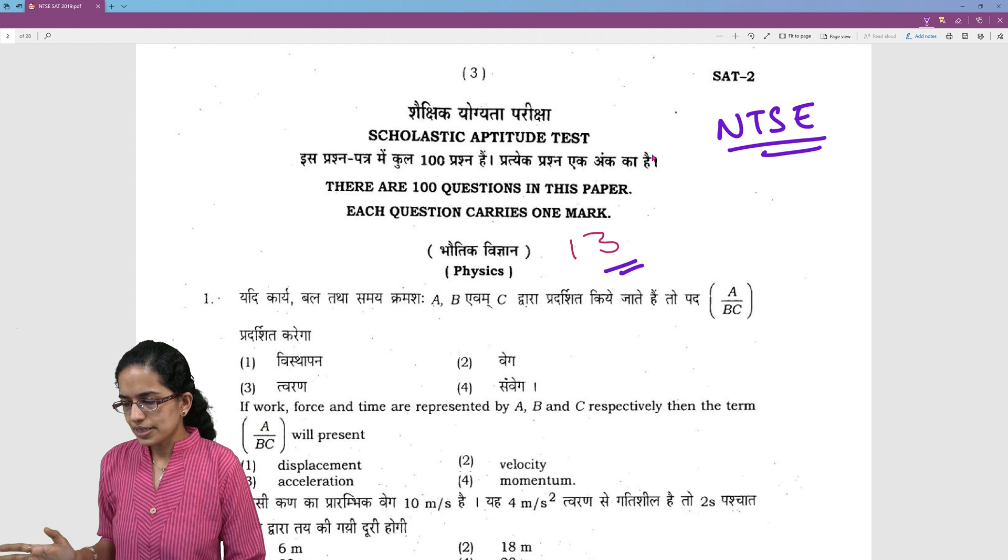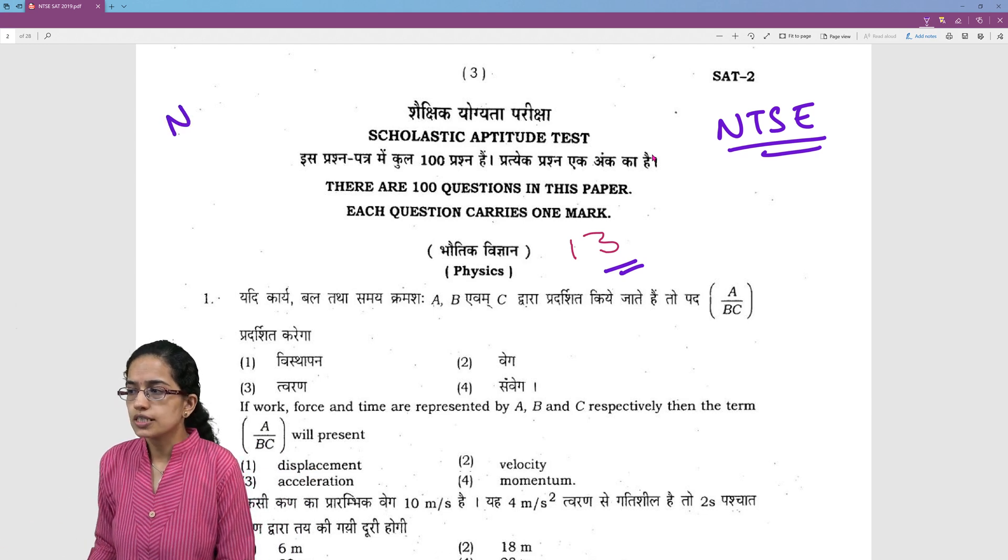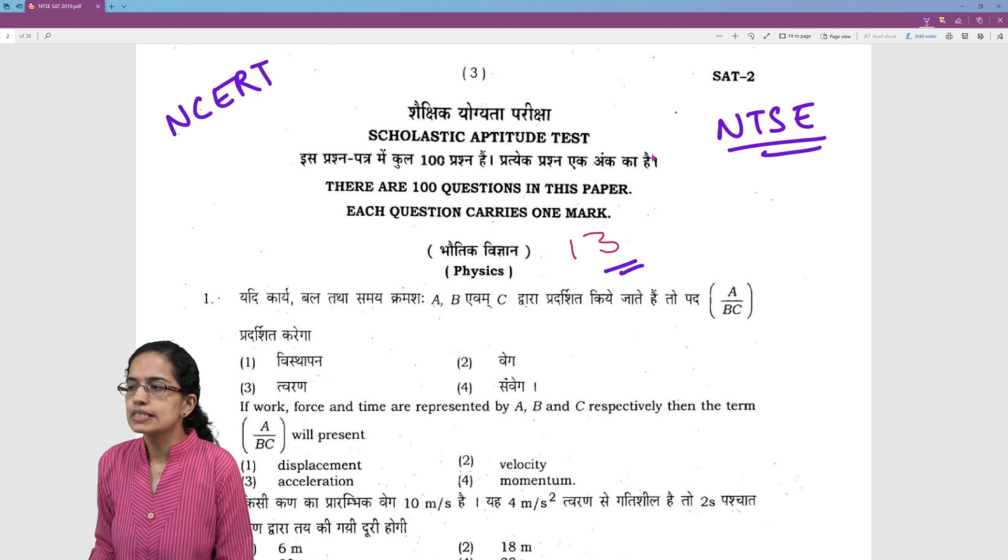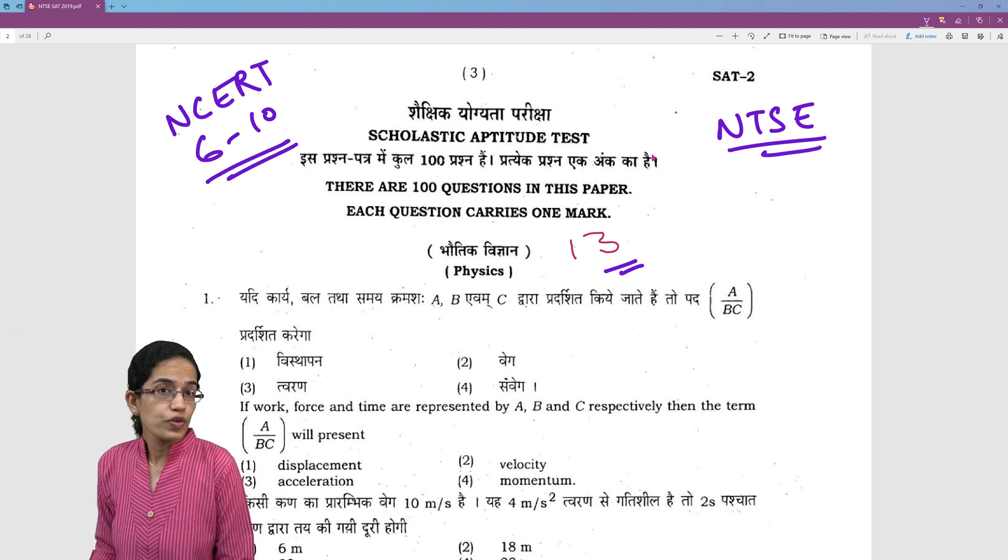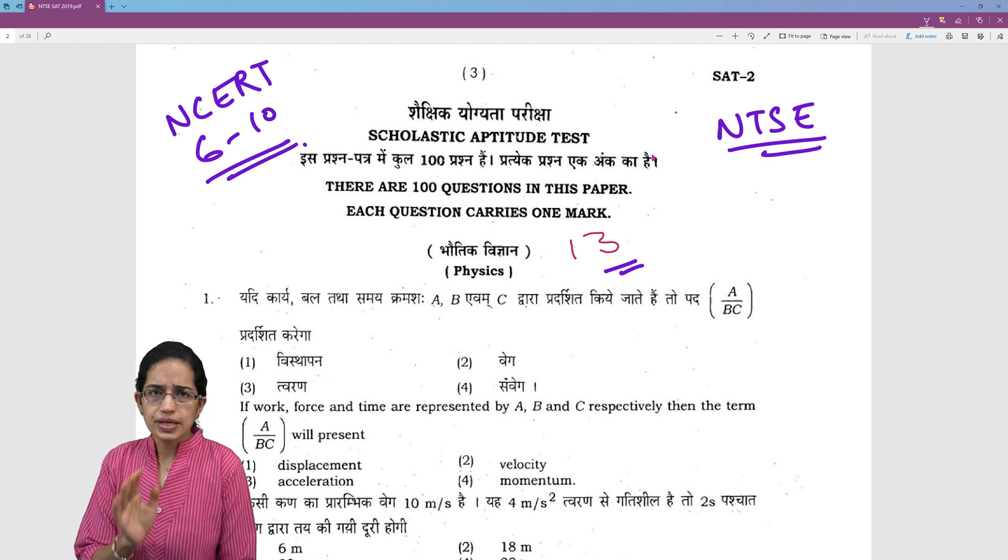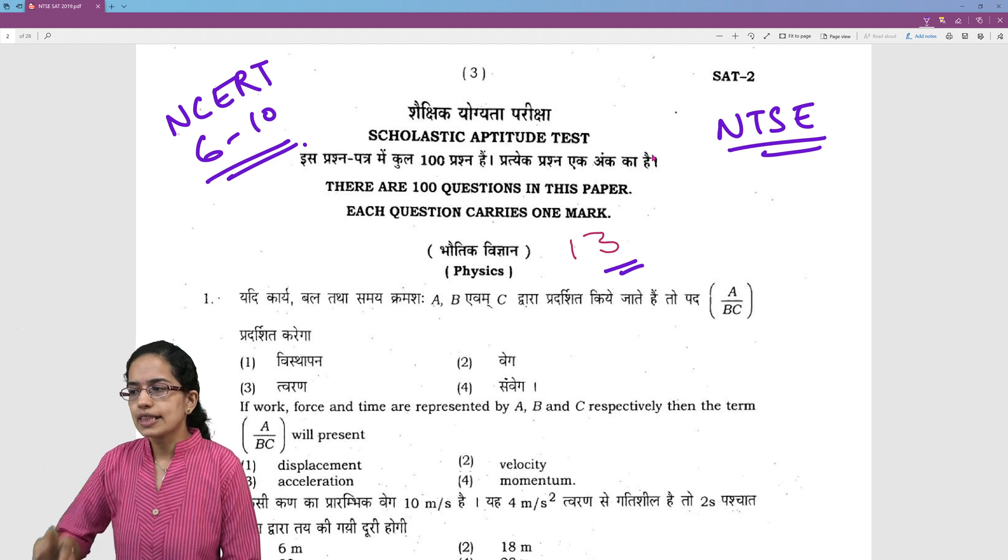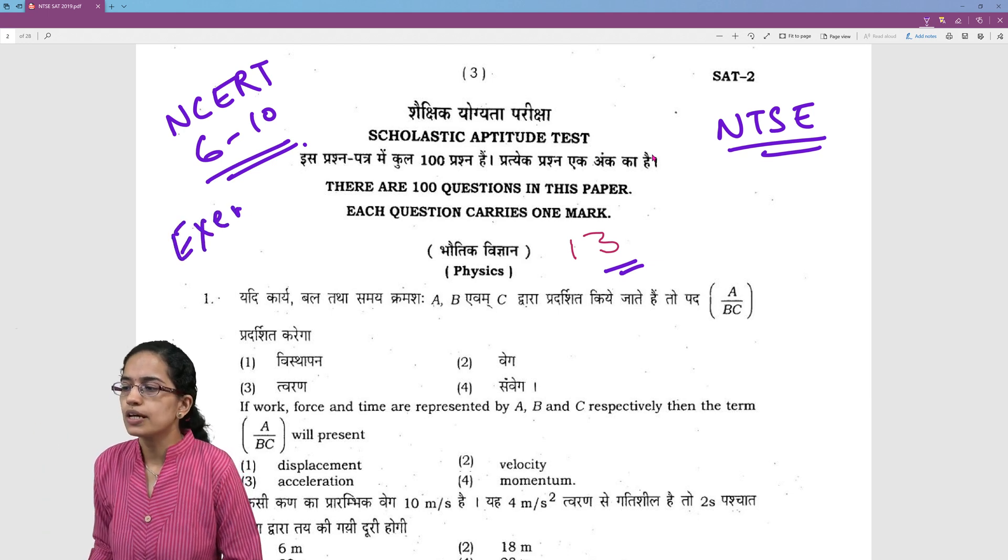biology and mathematics. But before that, what is very important - do NCERT 6th to 10th very carefully. Go through the formulas, the basic concepts thoroughly, and then solve the exemplar problems at least for class 9th and